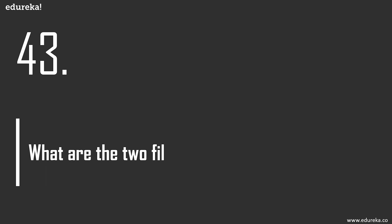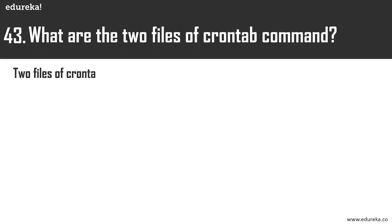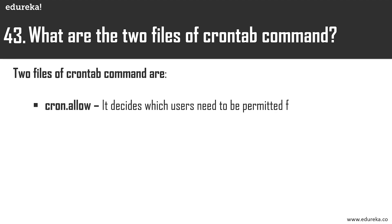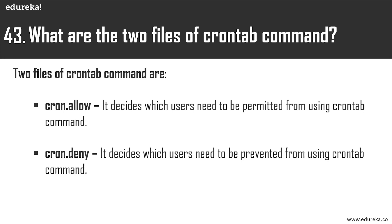Question 43: what are the two files of the cron tab command? The two files are cron.allow, which decides which users are permitted to use the cron tab command, and cron.deny, which decides which users are prevented from using it. In Red Hat-based systems like CentOS, these files are stored in /var/spool/cron, while on Debian and Ubuntu, they are stored in /etc/cron/crontabs.